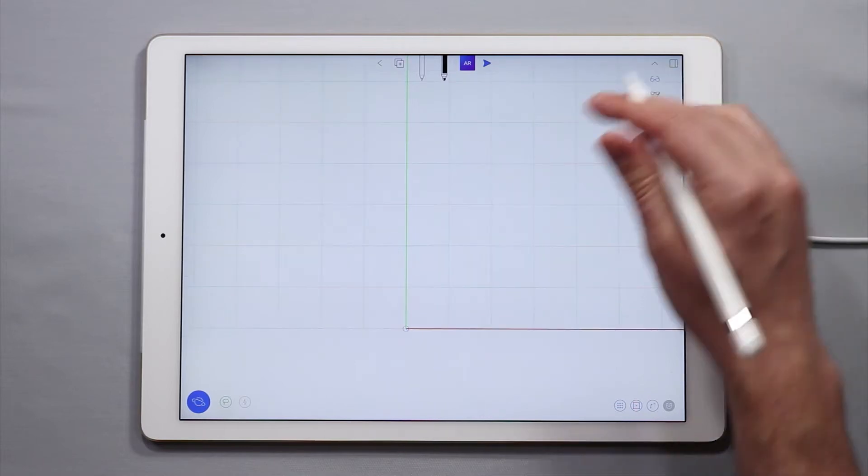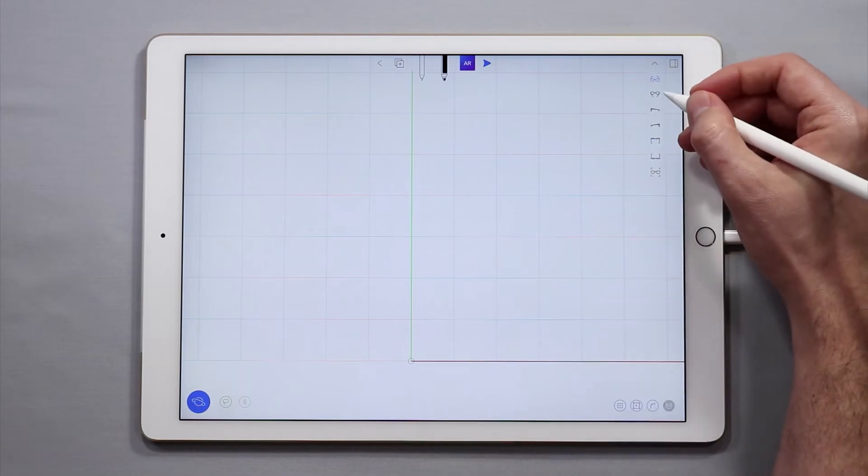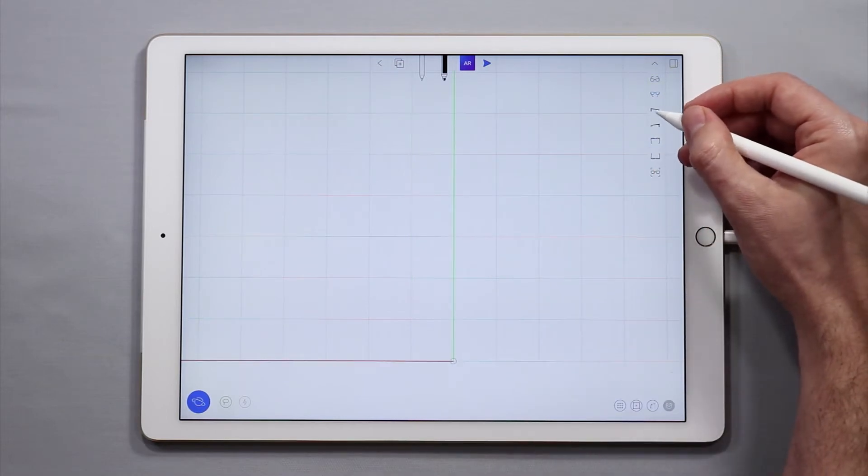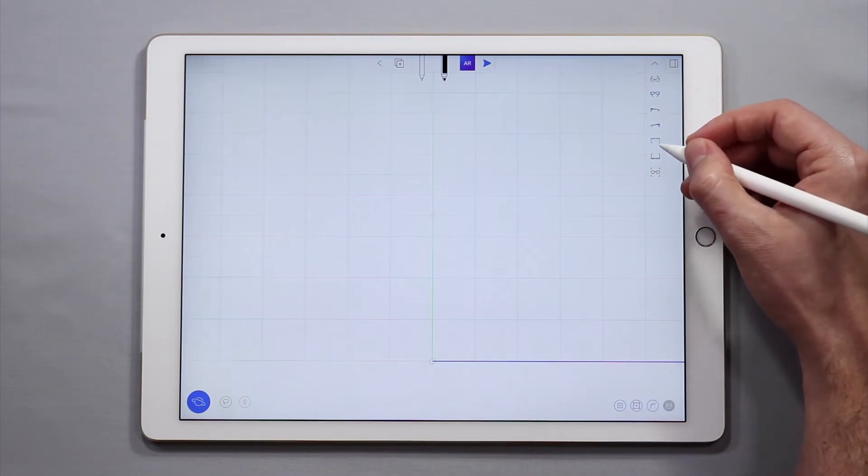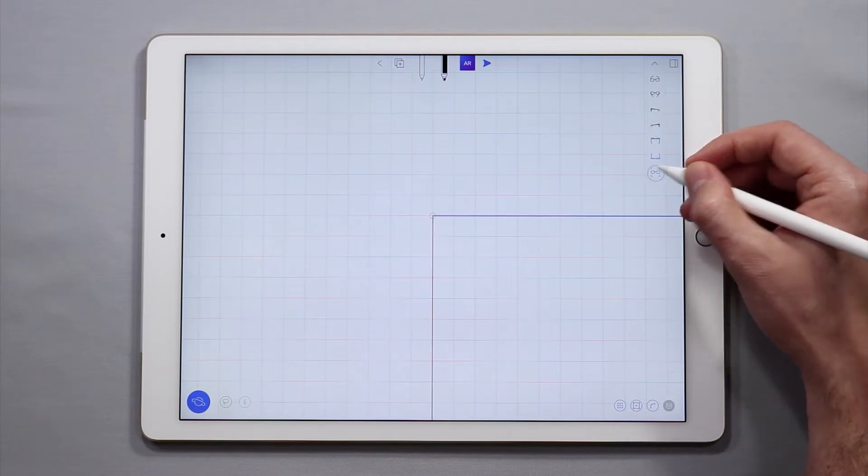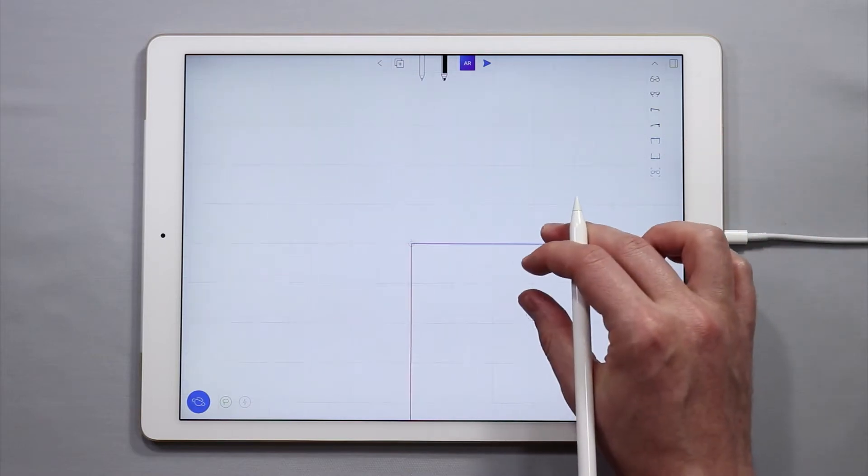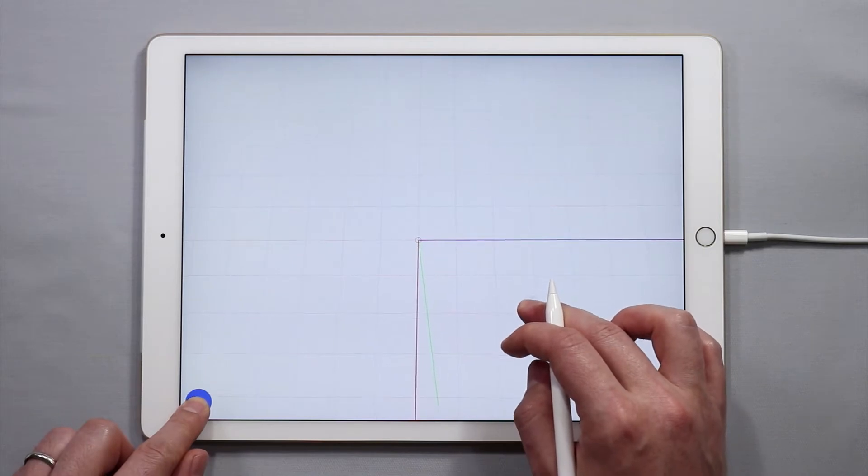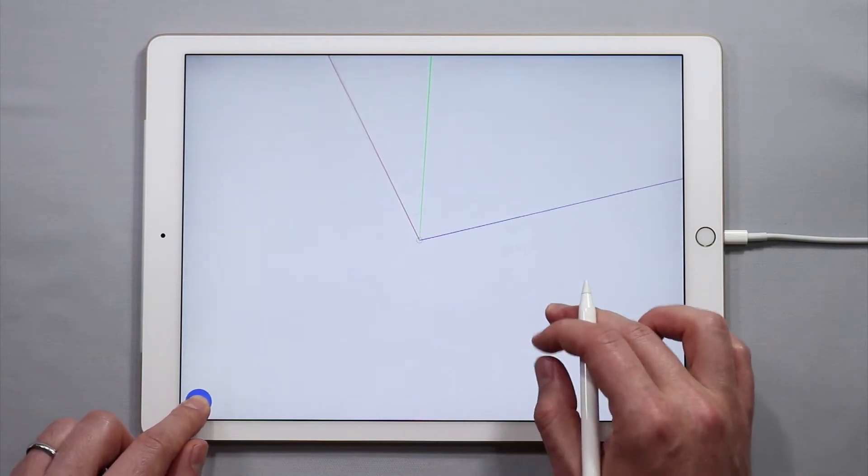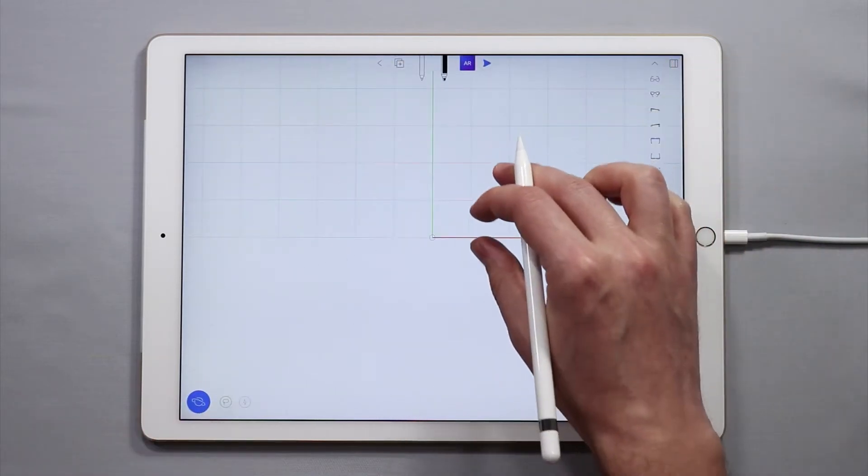By default when you open up a new file you are in the front view but you also have the back view, the right view, the left view, the top view, bottom view, and the view all. The view all feature will become more apparent and useful the more you create in UMake. I'm going to go back to the front view to start sketching.